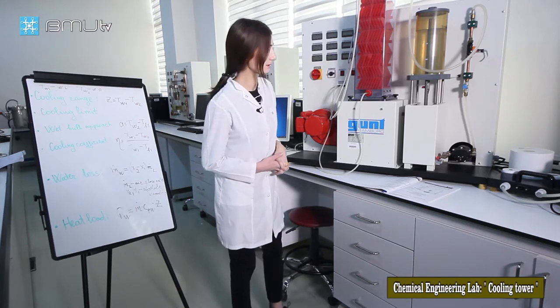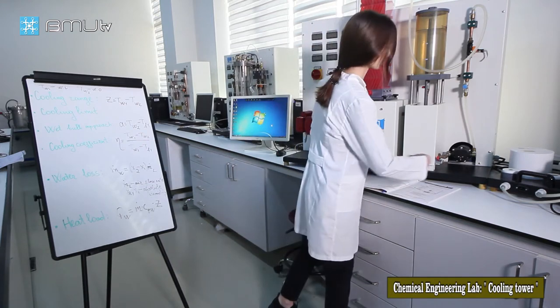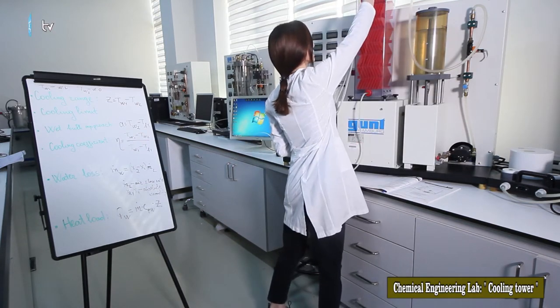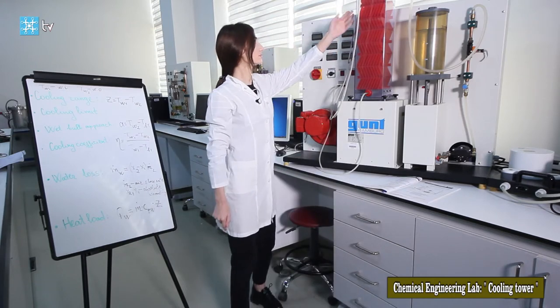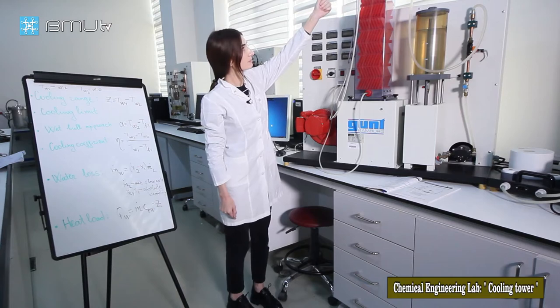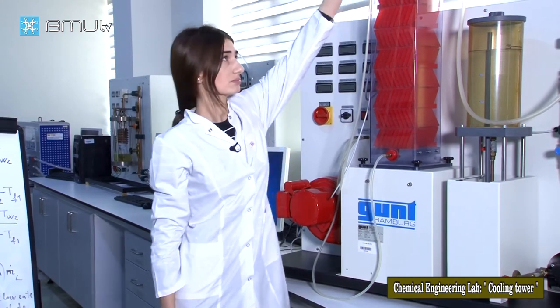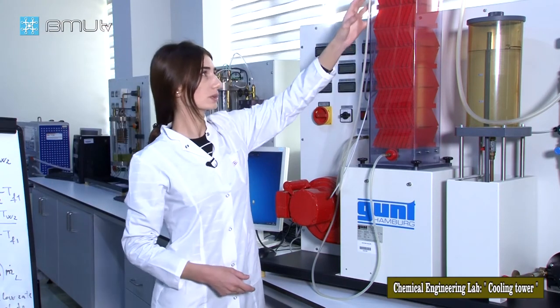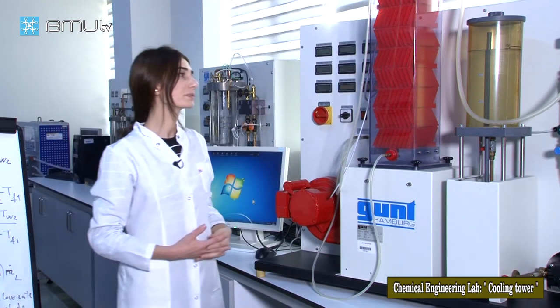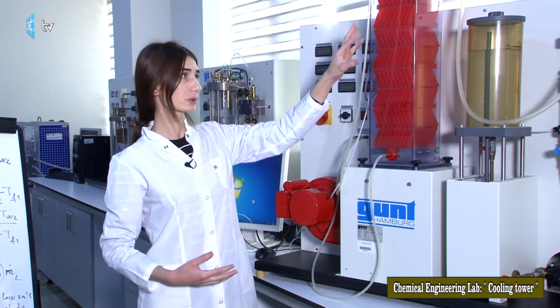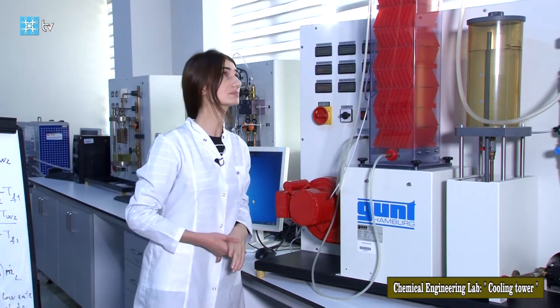The water is pumped through the centrifugal pump and comes to the cooling tower. Here, inside this part, there is a spray nozzle. The spray nozzle is used to distribute the water onto the packing inside the cooling column. It ensures that the spray of water is applied to the entire cross-section of the cooling tower.